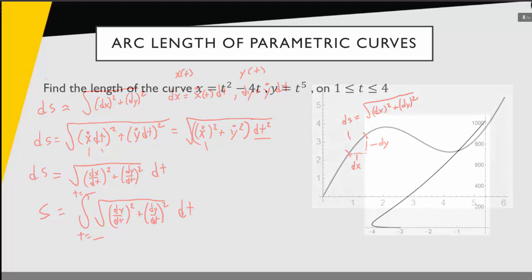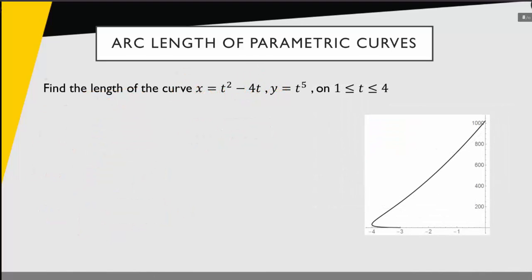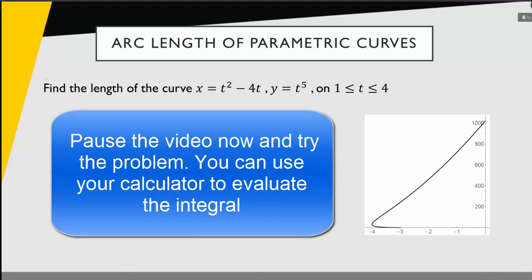Let's look at a specific example. Find the length of this curve, x equals t squared minus 4t, and y equals t to the fifth, on the interval from 1 to 4. Now I strongly encourage you at this point to go ahead and pause the video and see if you can actually do these calculations and work this problem out on yourselves.